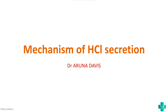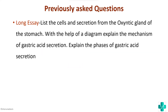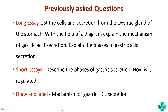In this video we are going to discuss the mechanism of HCL secretion in the stomach. This has been asked in many universities as a long essay, short essay, and diagram question. The long essay asks to list the cells and secretions of the oxyntic glands, explain the mechanism of gastric acid secretion with a diagram, and explain the phases. In this video we will primarily focus on the mechanism of gastric acid secretion; phases and regulation will be discussed in another video.